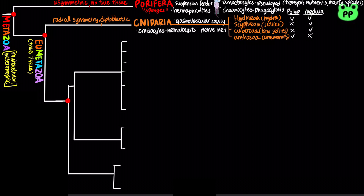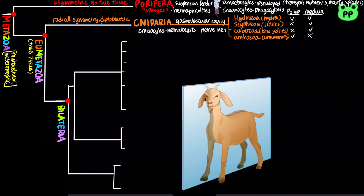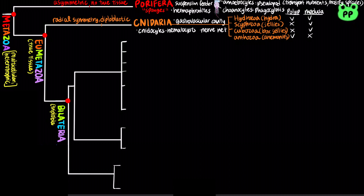Many animals in Eumetazoa can be further classified into the clade Bilateria. As its name suggests, this clade includes animals with bilateral symmetry. Bilateral animals are also triploblastic, meaning their tissues develop from three embryonic layers — ectoderm, mesoderm, and endoderm. Triploblastic animals can be further classified by their body cavities, known as coelom.